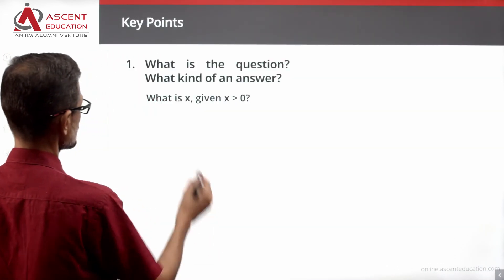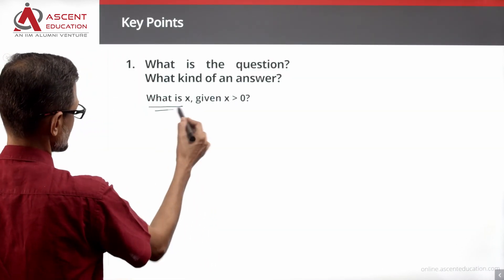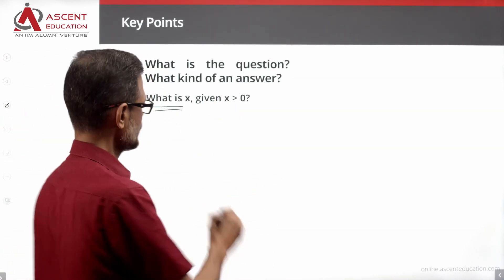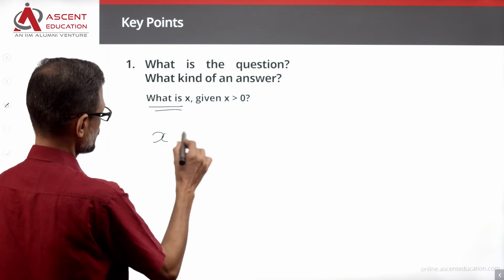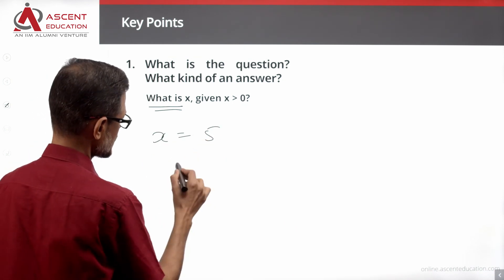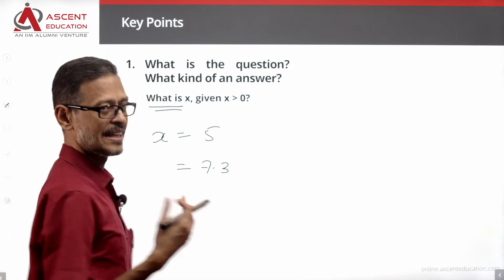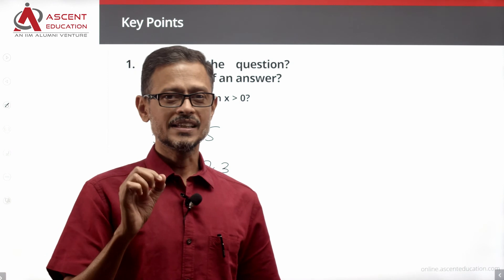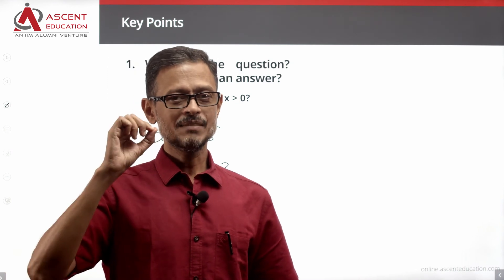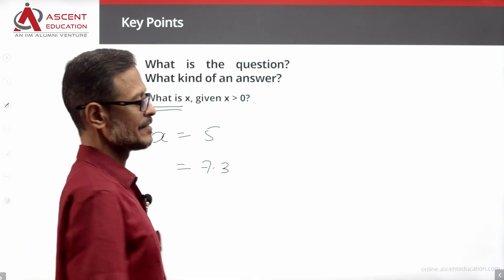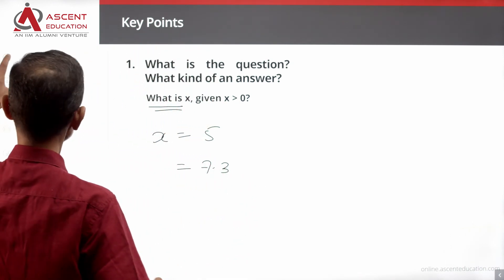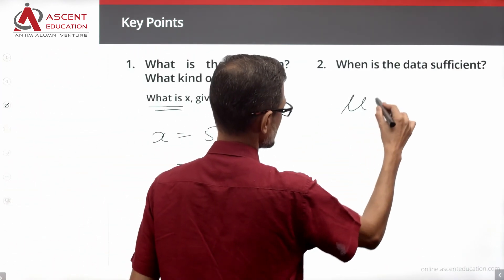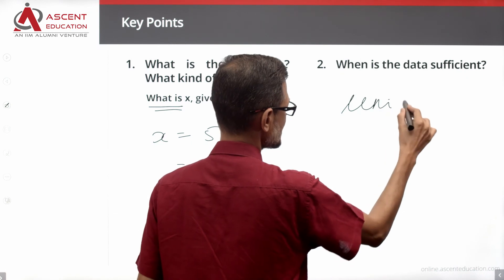The question is: what is the value of x? x is a positive number, so x could equal 5, or 7.3 — there are many possible values. The important thing is that data is sufficient only when we are able to give one single unique value.